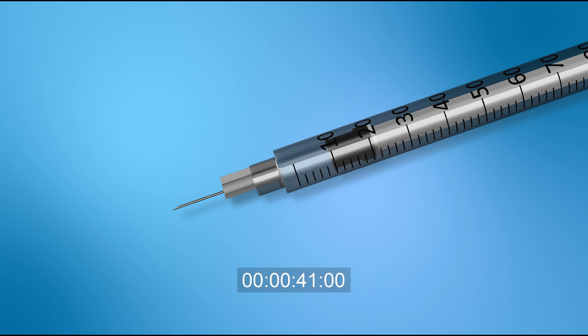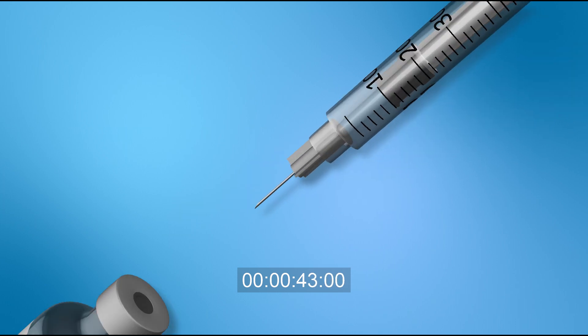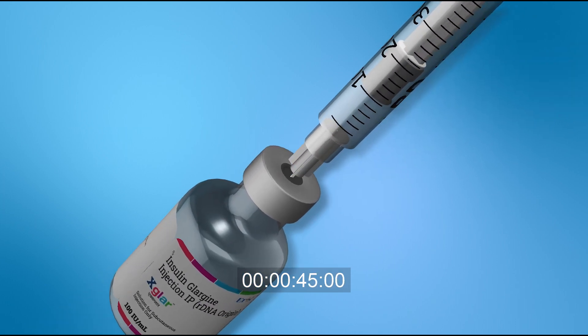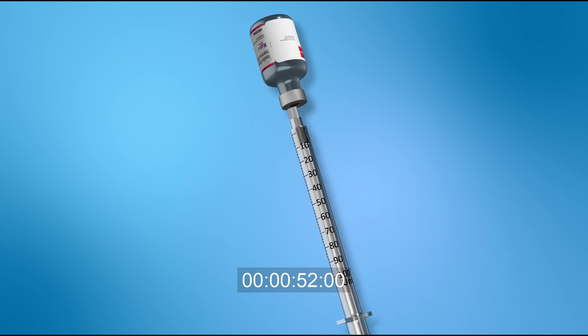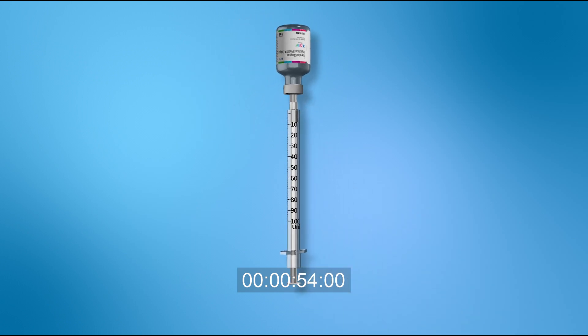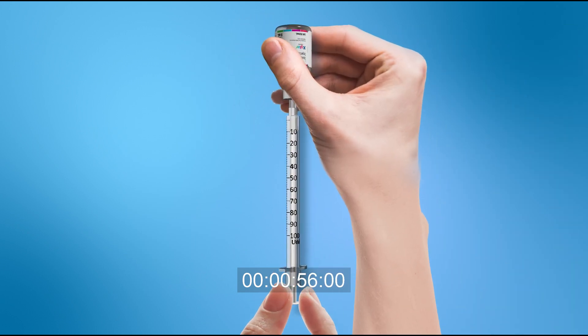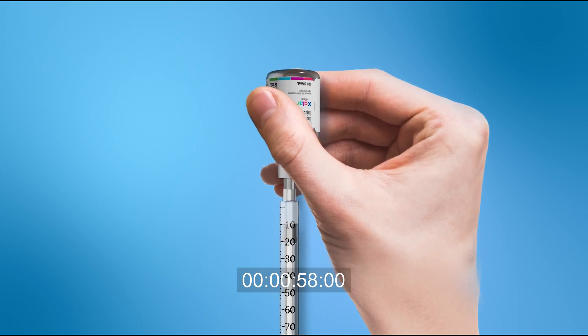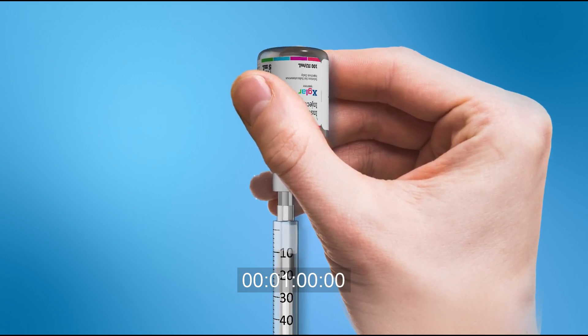Carefully take off the orange cap of needle. Insert the needle into the rubber top of the vial and push that amount of air into the vial. Turn both the vial and syringe into upside down position. Pull the plunger to withdraw the correct dose into the syringe.